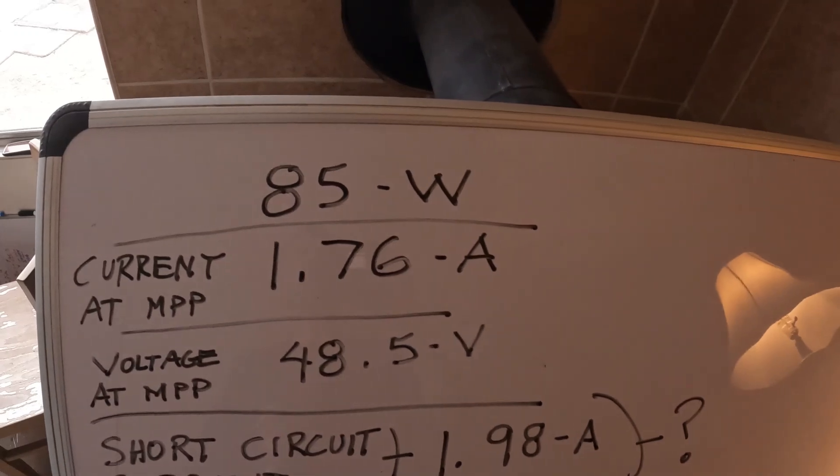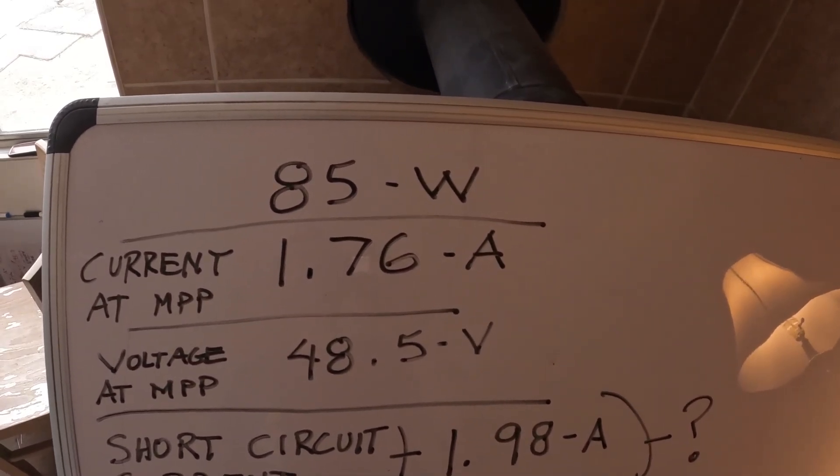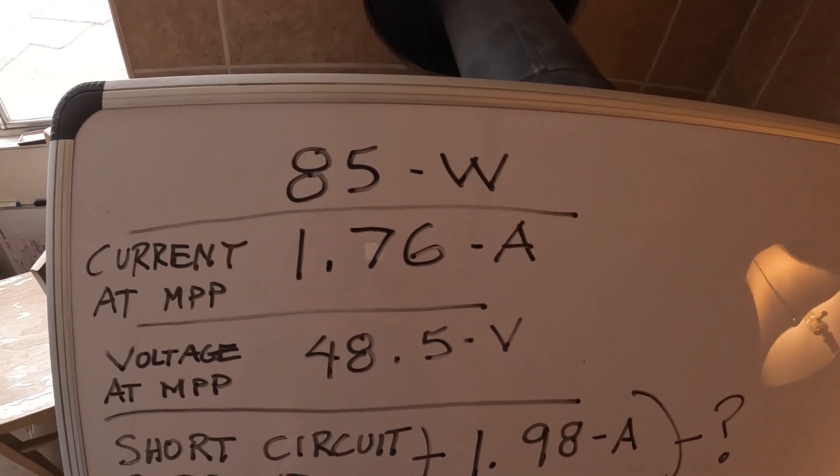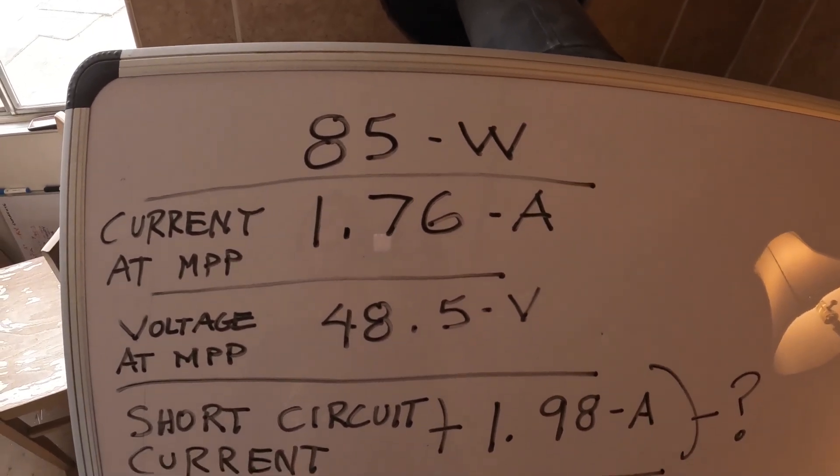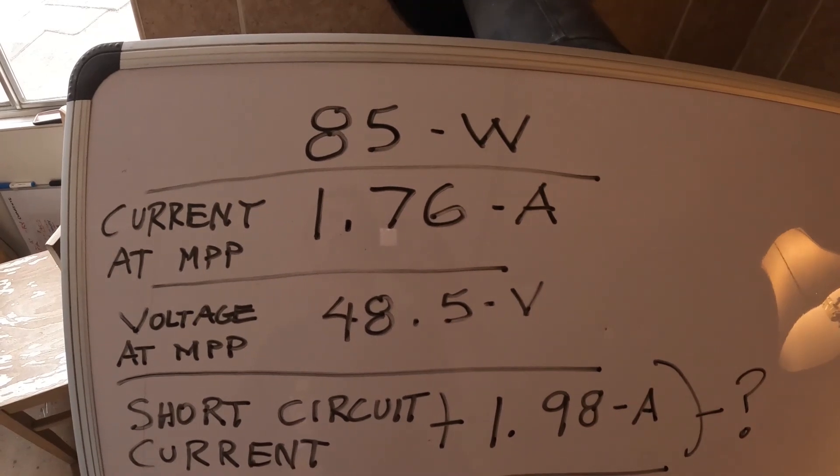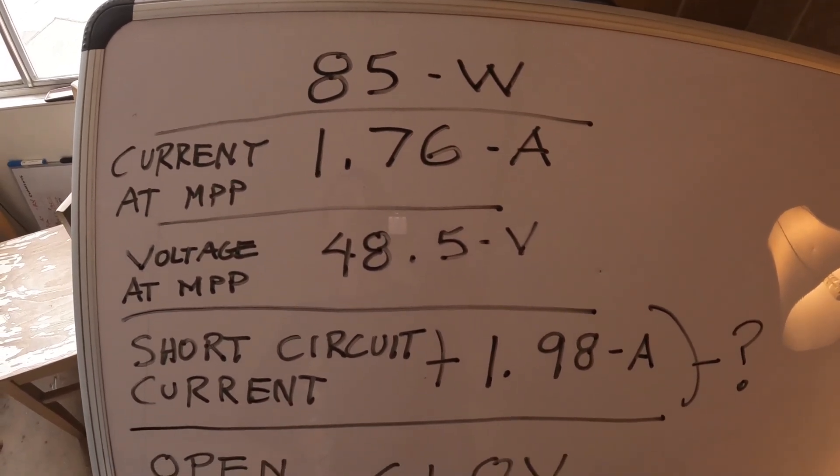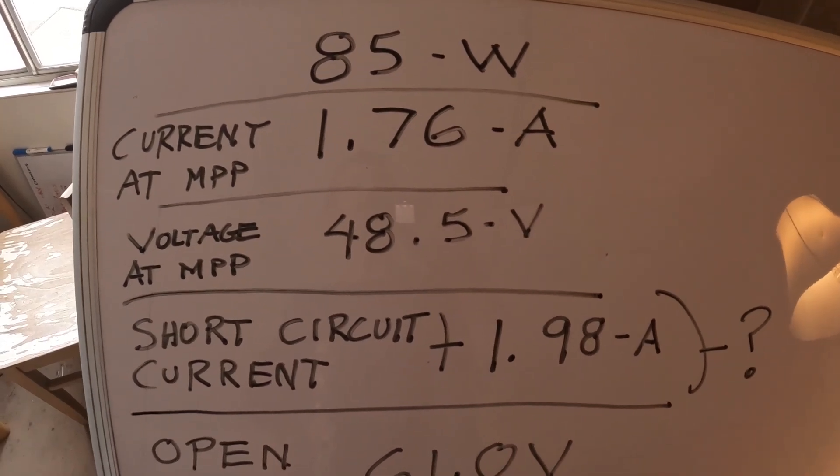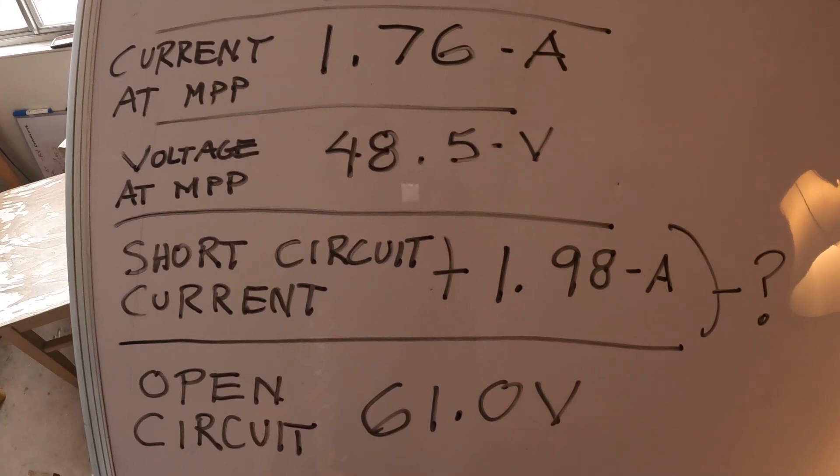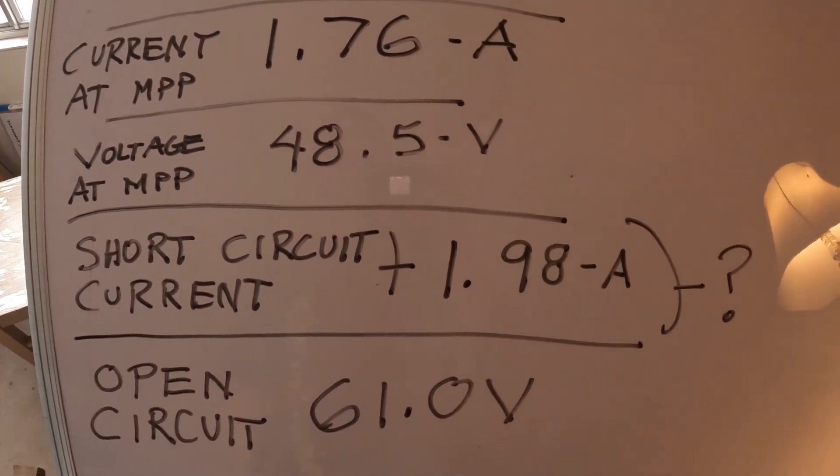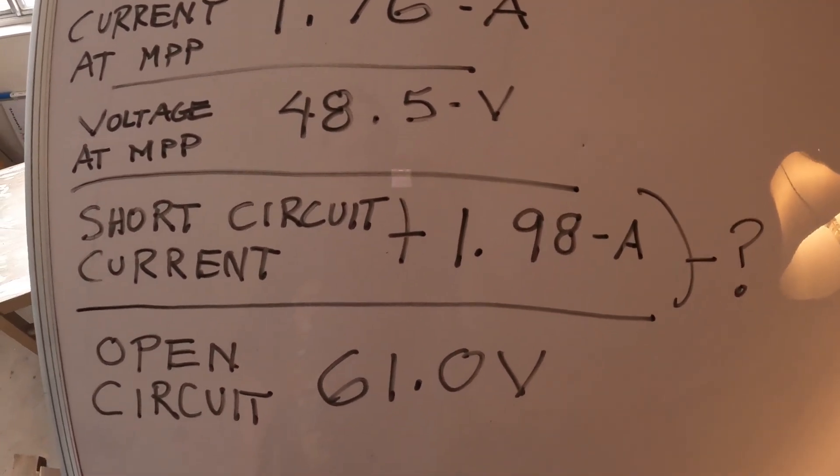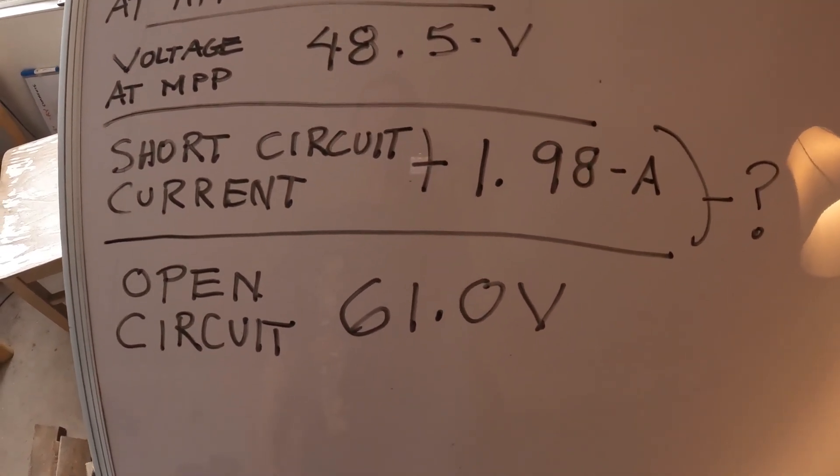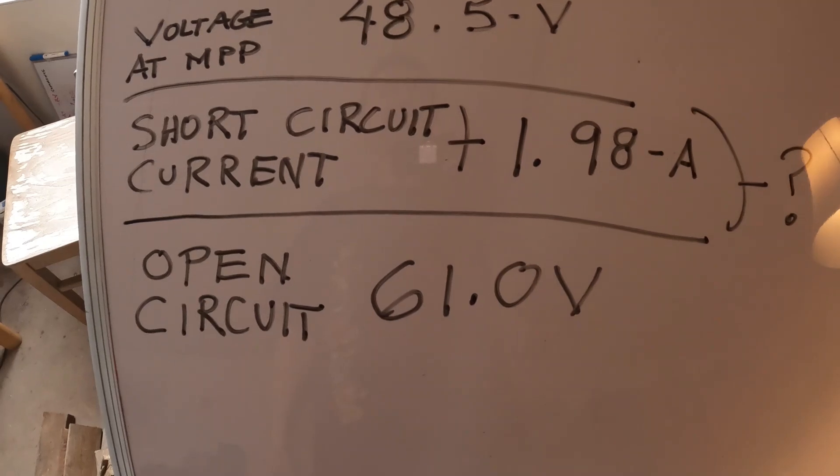This is the information on the back of my solar panels that I'm using to power the sand battery. They're 85 watt panels - current at MPP 1.76 amps, voltage at MPP 48.5 volts, so they're made for a 48 volt system. Short circuit current is 1.98 amps, open circuit 61.0 volts. That's what I'm running at, the open circuit.